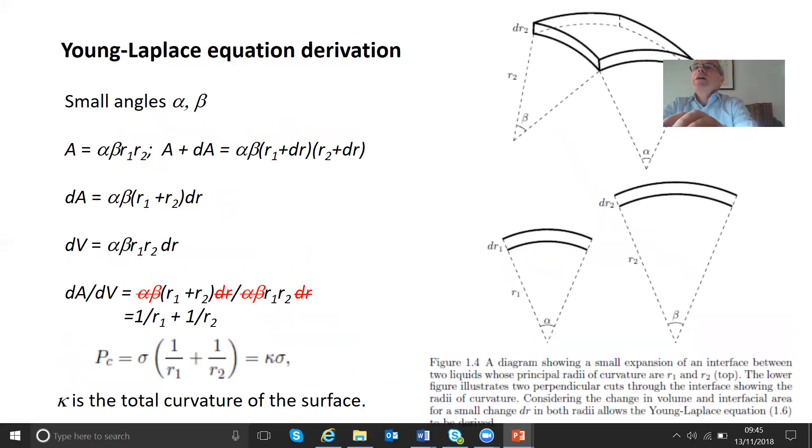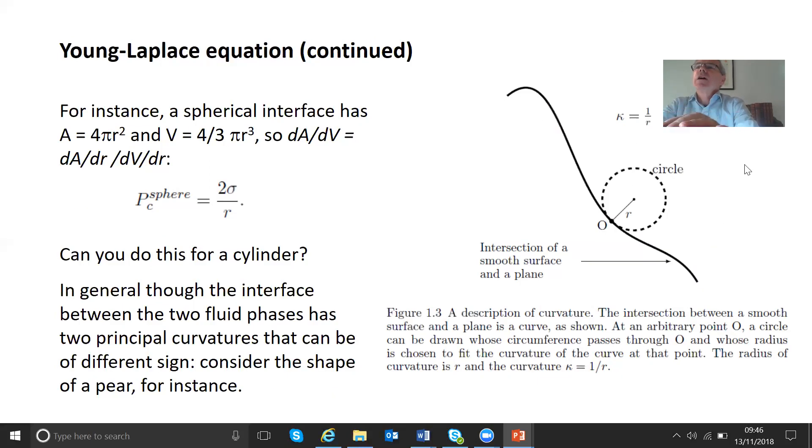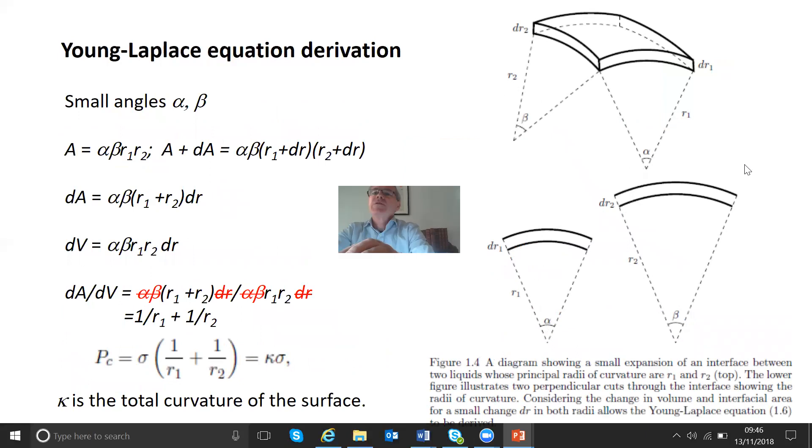So now here we have a derivation of the Young-Laplace equation. I'm just going to move this across. So derivation of the Young-Laplace equation. So what we're going to imagine here is that we have an interface between the phases, and they're subtended. It's just a little piece of interface subtended by a small angle. But of course, this is a solid angle. So in two perpendicular directions, it's α and β.